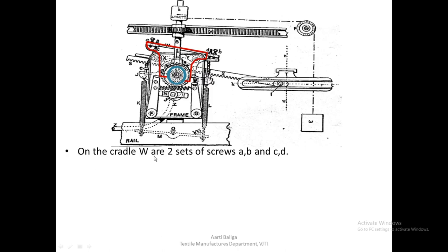On cradle W there are two sets of screws A, B, C, and D. Screw A is there, then screw B on the right-hand side, and then screw C which is connected via a chain to hook E.